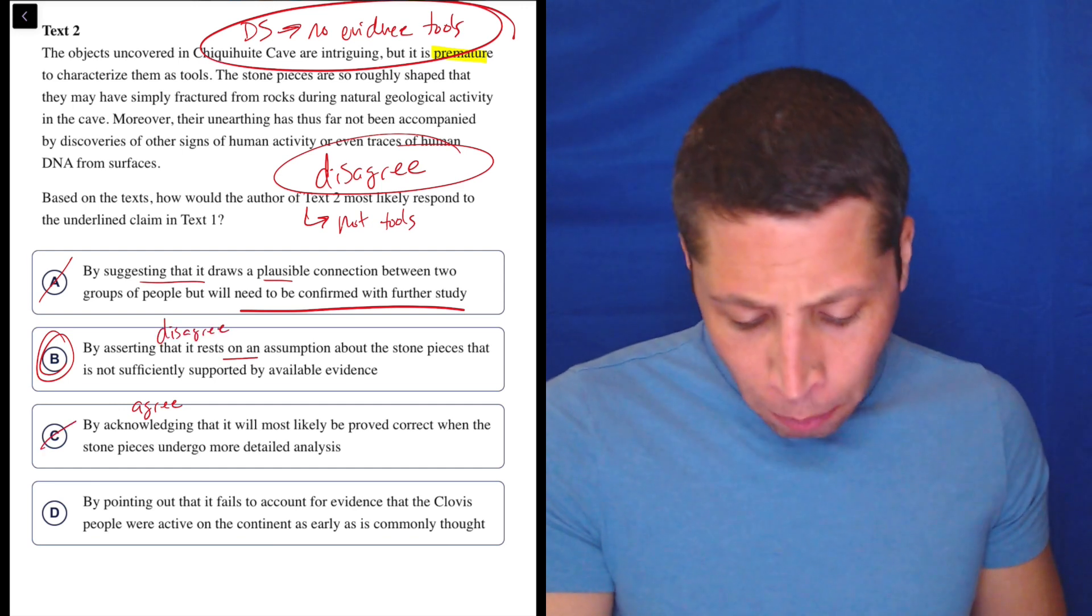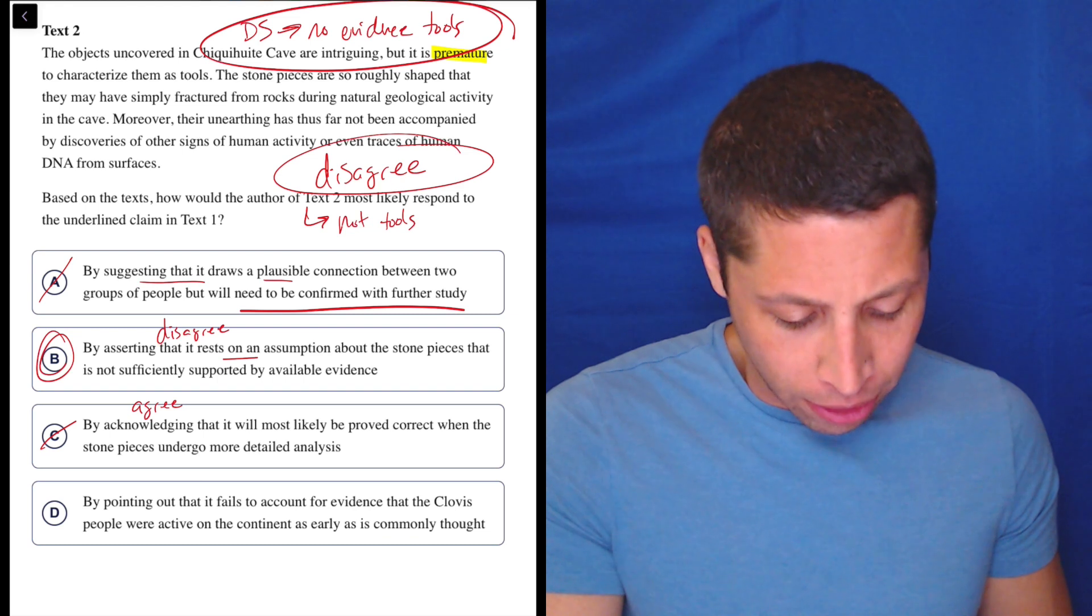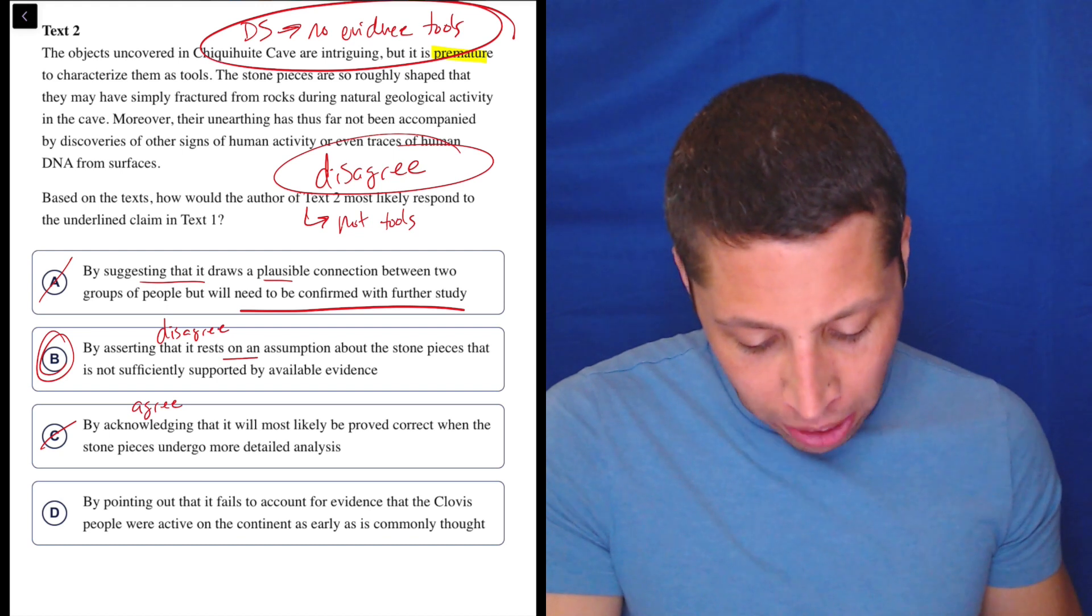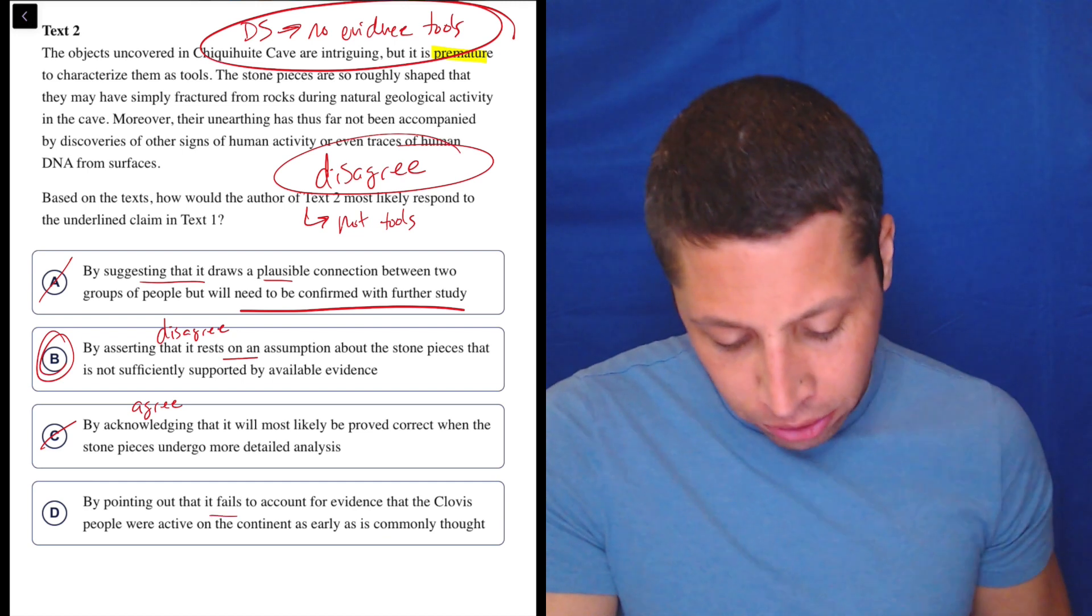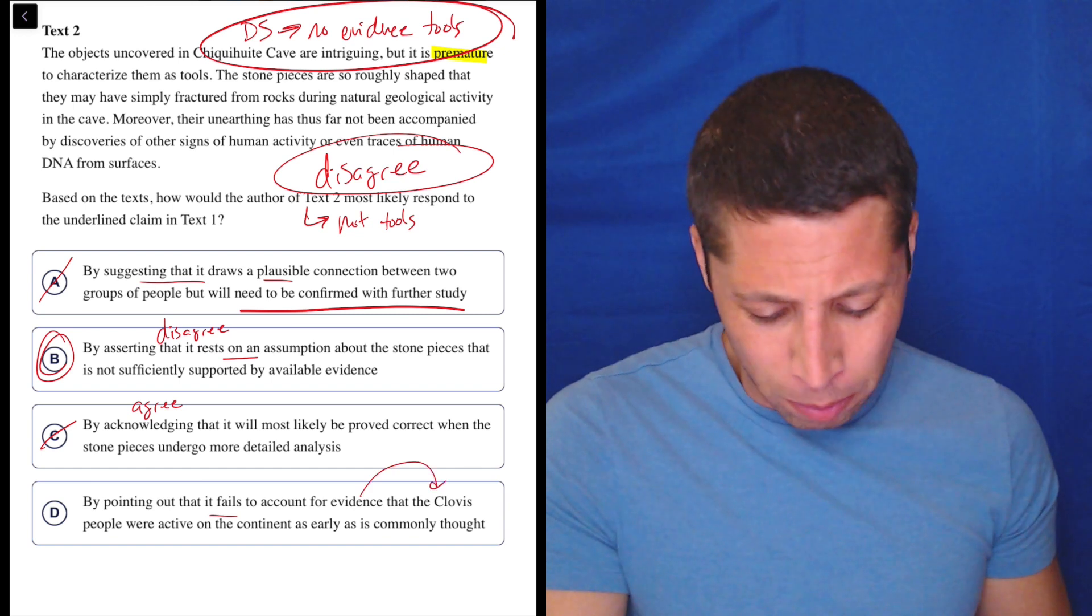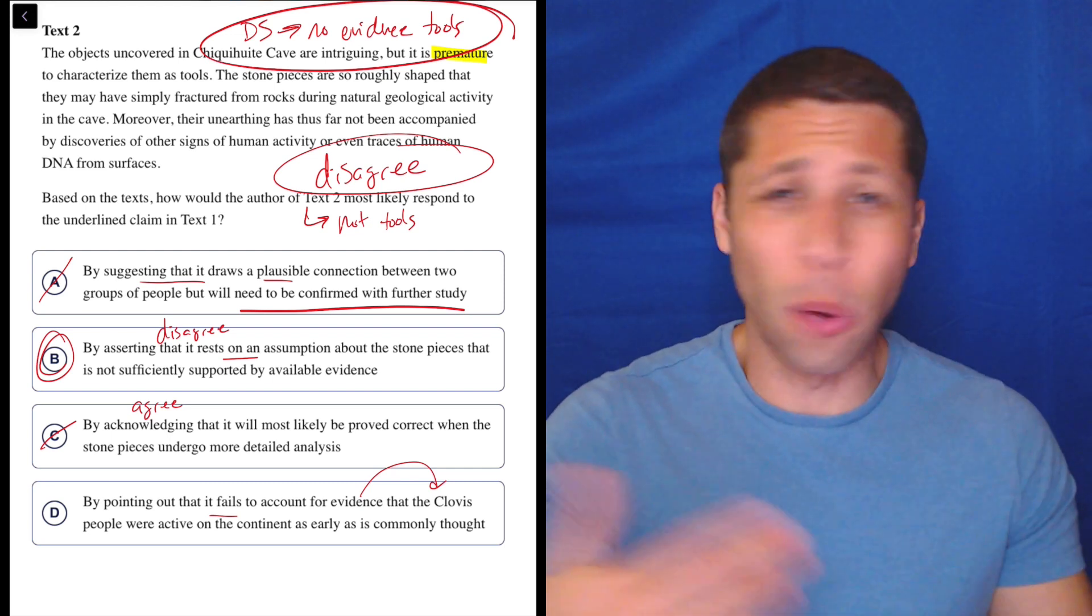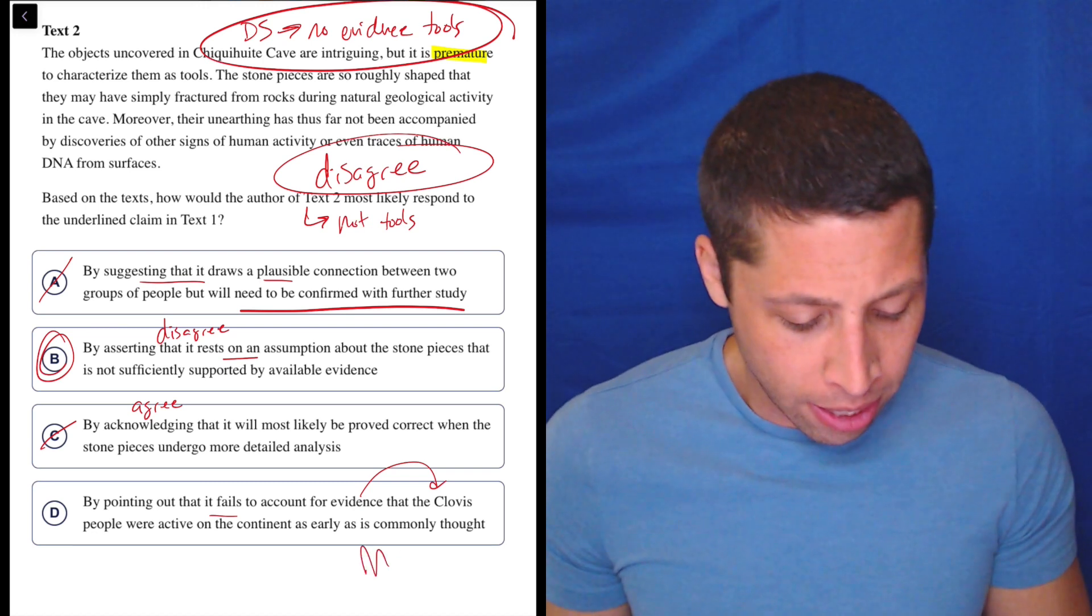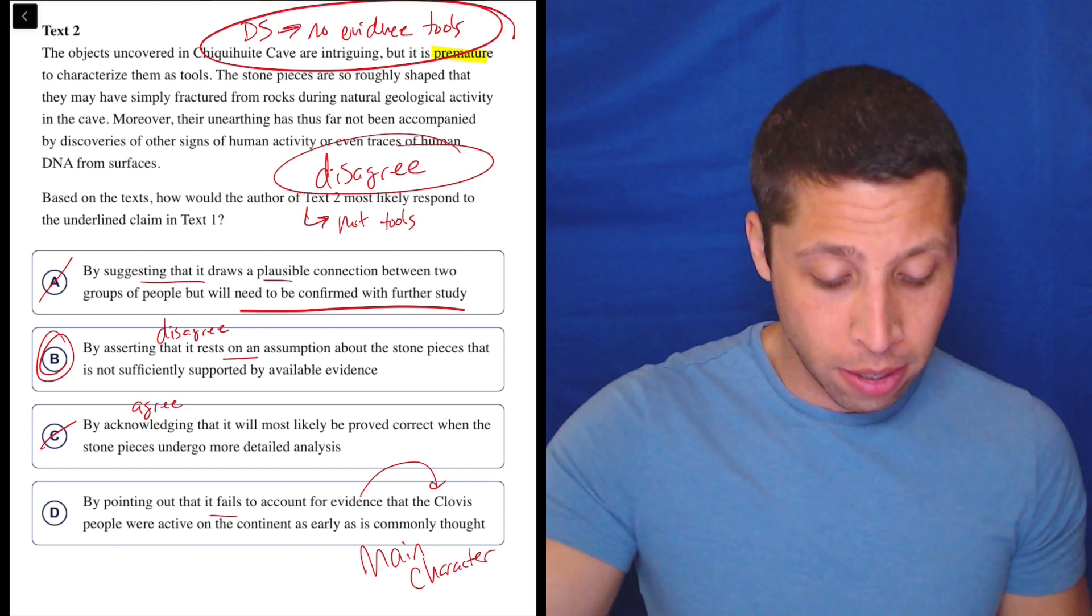Let's look at D. By pointing out that it fails to account for evidence that the Clovis people were active on the continent as early as is commonly thought. So I don't even understand that choice. Fails to account for evidence that the Clovis people were active on the continent as early as is commonly thought. So this sounds like disagreement, right? Fails. But it's saying that we're using evidence of the Clovis people. But I thought the whole point was these weren't tools, right? So this just seems like it's, I don't even know what it's supporting, but it doesn't seem related, right? Make it about the tools. This is about the people. So if anything, this is one of those like main character issues.